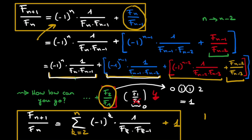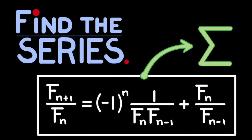We have successfully rewritten the original expression as a sigma sum notation. Now, for example to calculate f20 divided by f19, we simply fill in n equals 20 and get a very large sum of all these terms all the way down to f2 divided by f1, which is 1. That brings us to the end of this video. I hope you now have a better understanding of sequences and series and how to work with sigma notation. If you have any questions, leave a comment below or visit our Discord server. If you appreciated this video, drop a like — thanks for watching, see you in the next one!